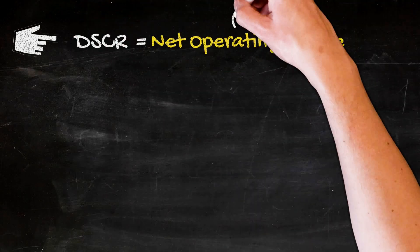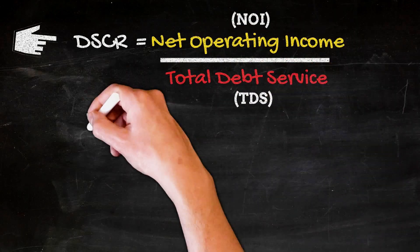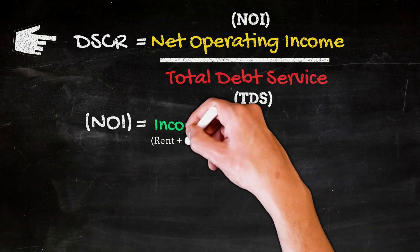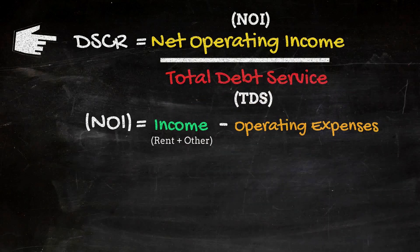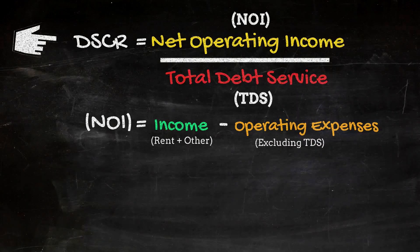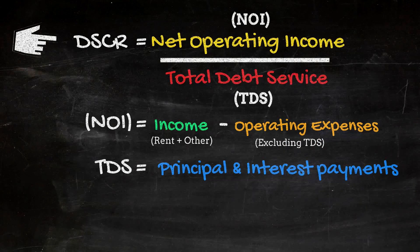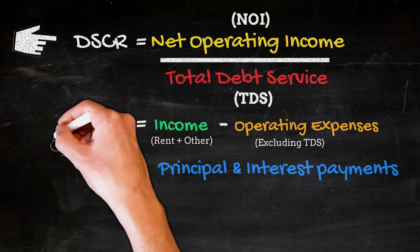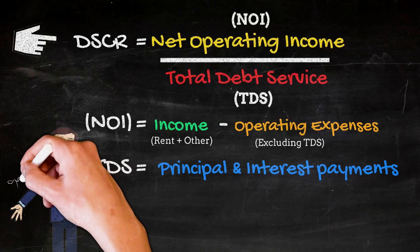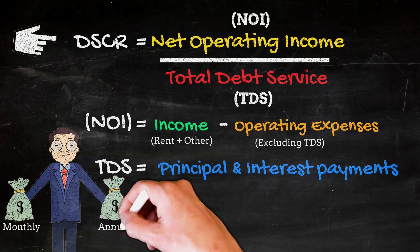Here's how it works. In order to calculate the DSCR, you'll need to divide the property's net operating income, NOI, by its total debt service, TDS. The NOI is the property's income from rent and other sources minus all of its operating expenses. Operating expenses include everything except for TDS. And TDS is all principal and interest payments owed to a lender for that particular property. You would typically calculate this on a monthly basis, but it comes out to the same ratio on an annual basis as well.